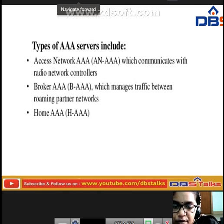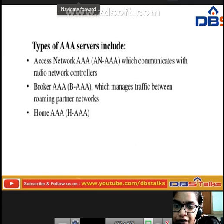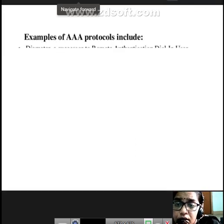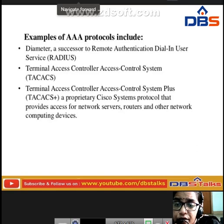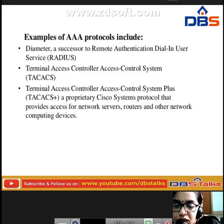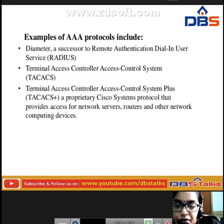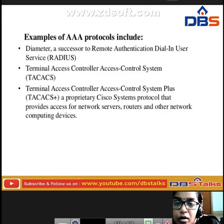The types of AAA servers include access network AAA, which communicates with radio network controllers and manages traffic between roaming and partner networks. Examples of AAA protocols include Diameter — the successor to RADIUS — and TACACS+ (Terminal Access Controller Access Control System), a Cisco Systems protocol that provides access control for network servers, routers, and other network computing devices.